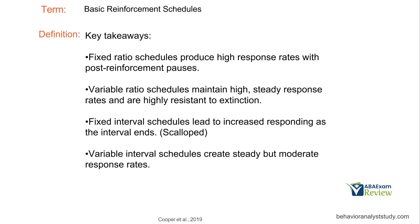Some key takeaways: Fixed ratio schedules produce high response rates with post-reinforcement pauses. Variable ratio schedules maintain high, steady response rates and are highly resistant to extinction. Fixed interval schedules lead to increased responding as the interval ends — a scalloped pattern. Variable interval schedules create steady but moderate response rates.